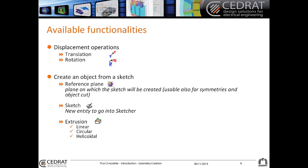You can displace your object through translation and rotation, and you can create objects from a sketch. To create a sketch, you select the reference plane on which the sketch will be created, then enter the 2D sketcher. Once the 2D sketch is created, you can make an extrusion in the 3D modeler, which can be linear, circular, or helicoidal.